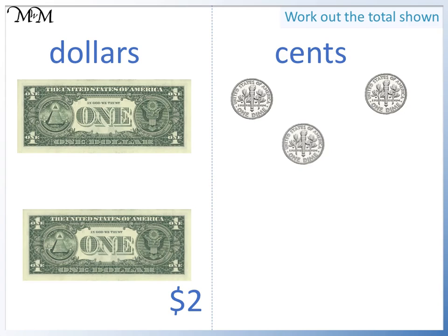Two dimes, so twenty cents. Three dimes, so thirty cents. So we have two dollars and thirty cents, which we write as two dollars thirty.